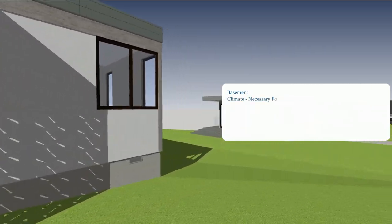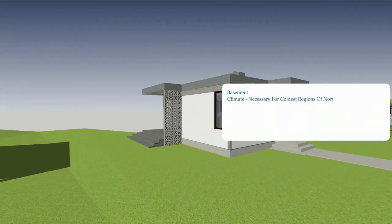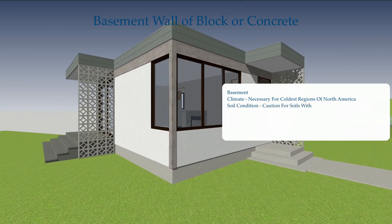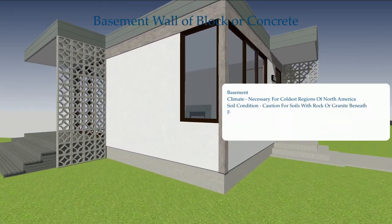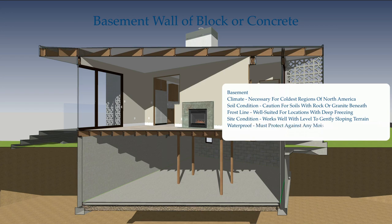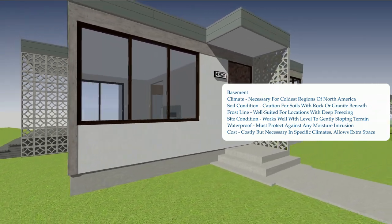Basement: Climate — necessary for the coldest regions of North America. Soil condition — caution for soils with rock or granite beneath. Frost line — well suited for locations with deep freezing. Site condition — works well with level to gently sloping terrains. Waterproofing — must protect against any moisture intrusion. Cost — costly but necessary in specific climates; allows extra space.